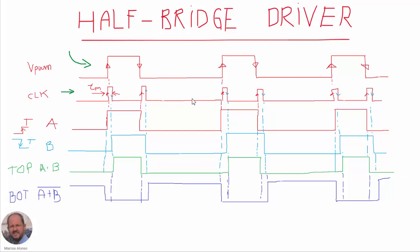From these pulses, we are going to generate signal A. Signal A is generated from the positive edges of the CLK signal. At this positive edge, we are going to turn on signal A, and then on the next one, we are going to set the signal to zero. We are going to generate this signal using a toggle flip-flop activated with the positive edges of this signal. Similarly, signal B is generated from the negative edges of the CLK signal, toggling signal B starting from zero, then one, then zero again.